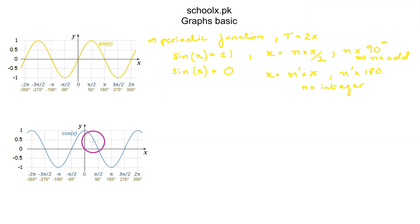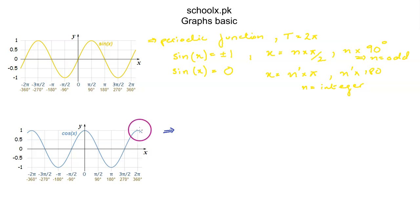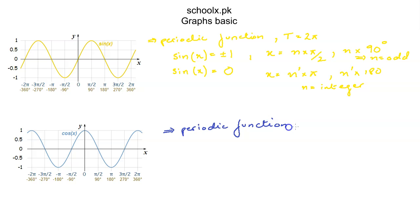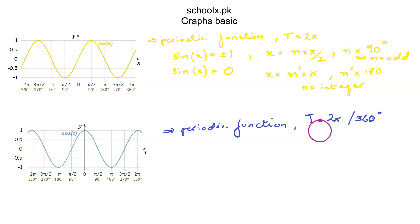Now moving on to the next graph, which is that of cosine. Cosine of x is also a periodic function and the period of cosine of x is 2π — after 2π it repeats itself. So the period of cosine is the same as that of sine: 2π radians or 360 degrees.